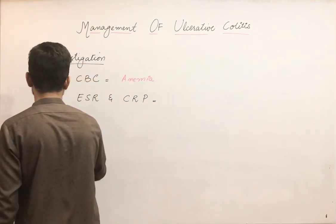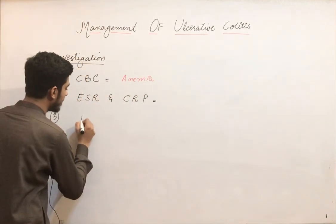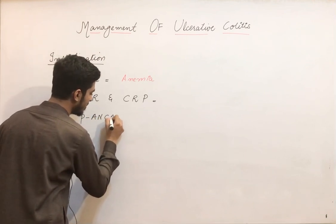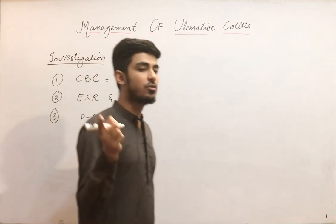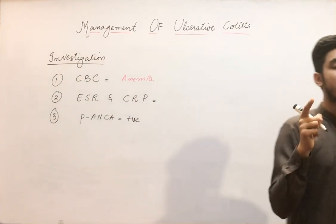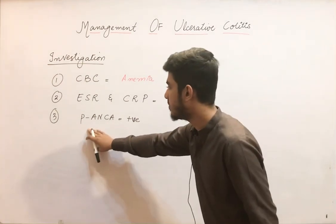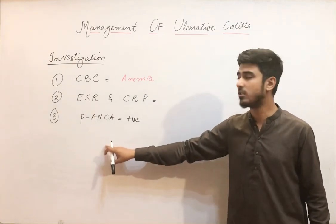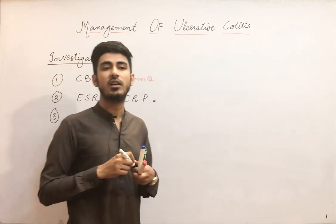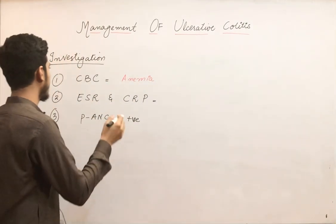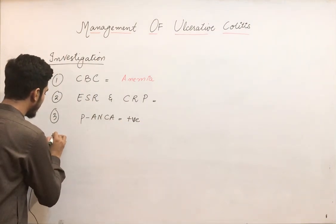The third investigation: we all know from our previous lecture that ulcerative colitis is P-ANCA positive. In Crohn's disease, it is anti-saccharomyces cerevisiae antibody positive. So this is a differentiating feature between Crohn's disease and ulcerative colitis.